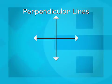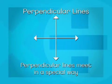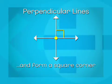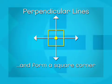Perpendicular lines are two lines that do meet in a special way. They intersect each other at a point and form a square corner. See that square corner? Actually, notice that there are four square corners where perpendicular lines meet.